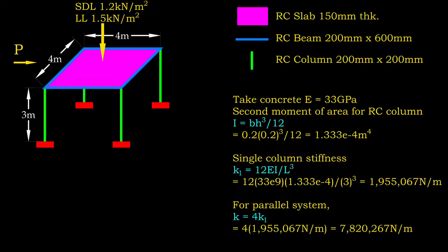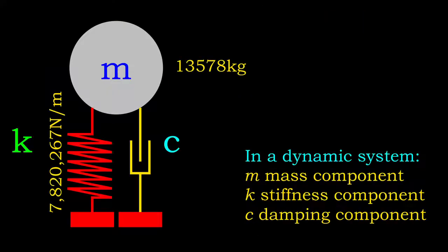Therefore, these columns are in a parallel system. Based on the restraint condition of the column, we can determine the individual stiffness. By knowing the individual stiffness, we can then determine the stiffness component contributed by all column elements.